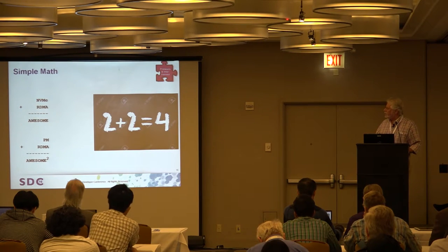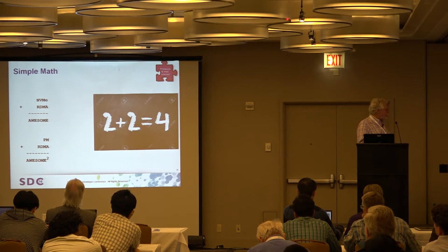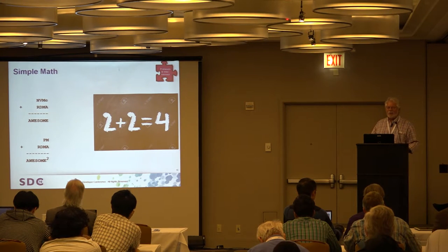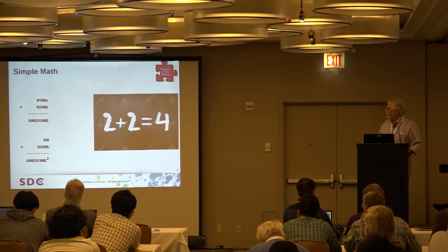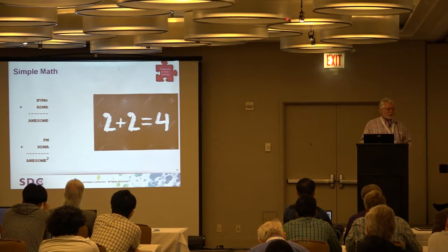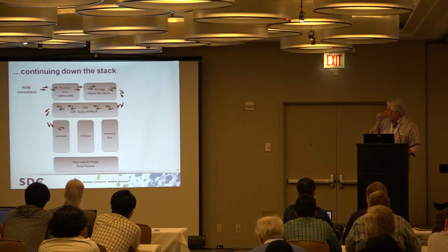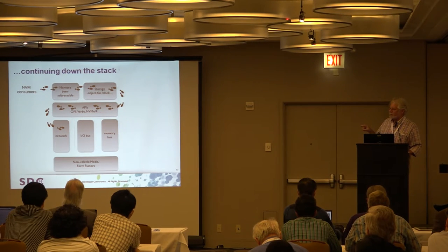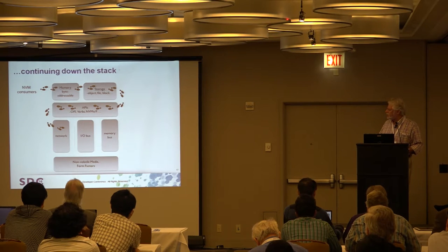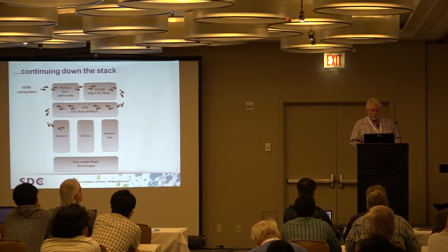Putting it together — we have NVMe over RDMA today, that's NVMe over fabrics. If we start talking about what we need to change to get to persistent memory using RDMA-style mechanisms, you get to what Stephen would call 'awesome squared' — a great expression. So I've taken you through the consumer layer, the APIs, started through the infrastructure, got as far as networks, and I'm going to make Stephen come talk about the IO bus, PCIe implications, and the memory bus, then close with a discussion about the media and form factors.